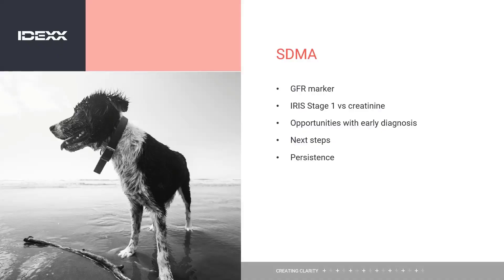In summary, SDMA is a marker of GFR. It allows us more opportunity to pick up IRIS Stage 1 or early Stage 2 patients with early kidney disease than creatinine alone. That early diagnosis gives us an opportunity to look for a cause or manage them to try and slow progression — and there's a reasonable chance that a mildly increased SDMA is going to persist over time. Hopefully this has been valuable. If you have any questions, please don't hesitate to reach out to us, and we'll be back with another webinar soon.